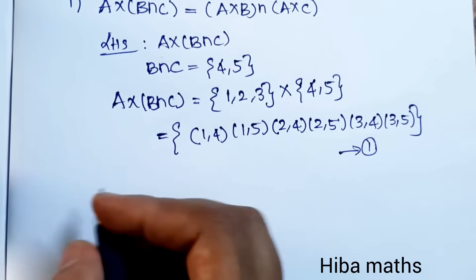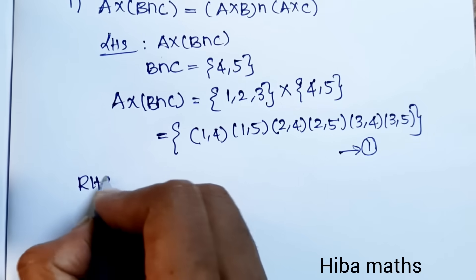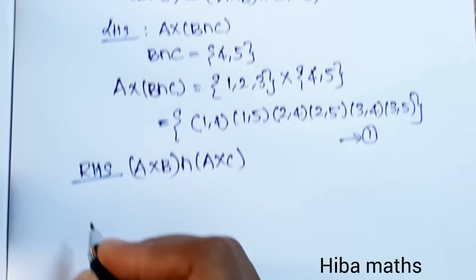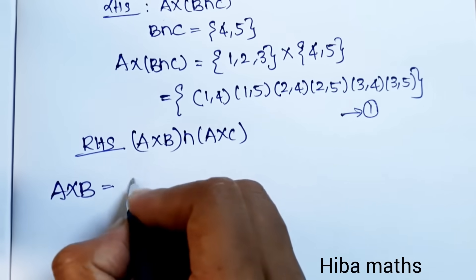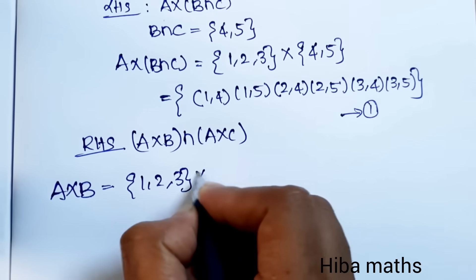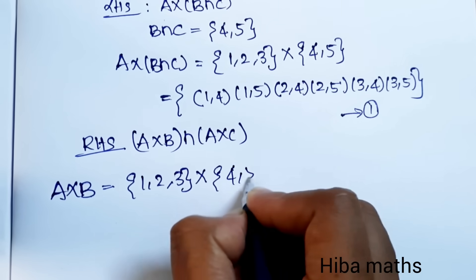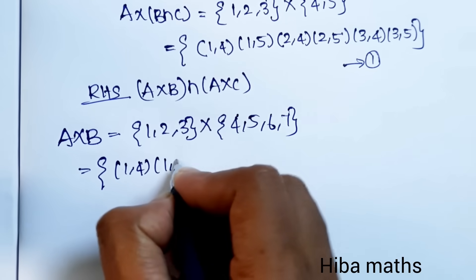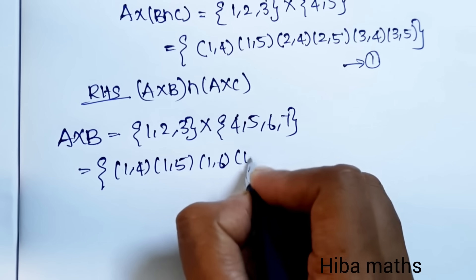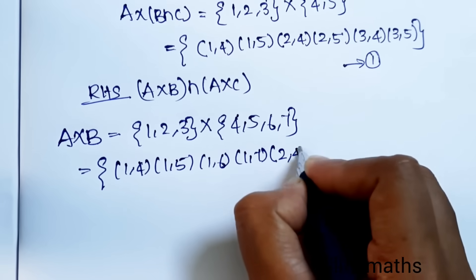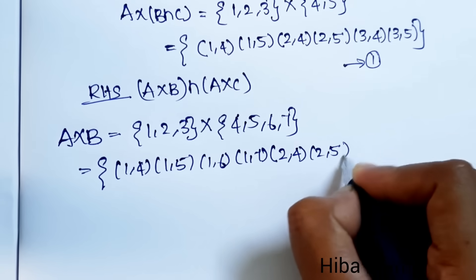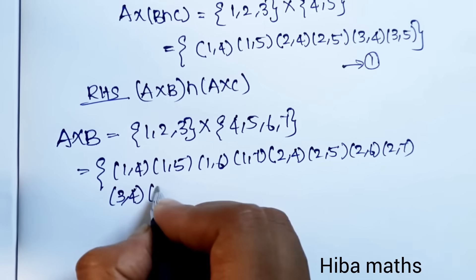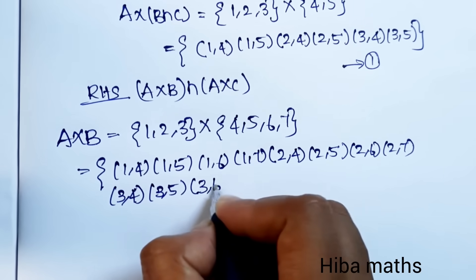Now for the RHS, first compute A×B. A = {1,2,3} cross B = {4,5,6,7} gives: (1,4),(1,5),(1,6),(1,7),(2,4),(2,5),(2,6),(2,7),(3,4),(3,5),(3,6),(3,7).